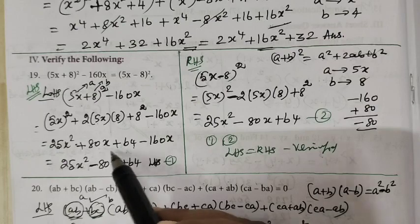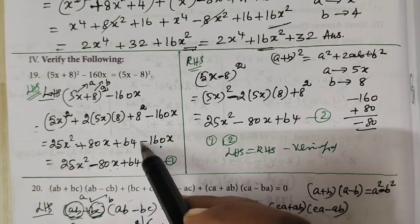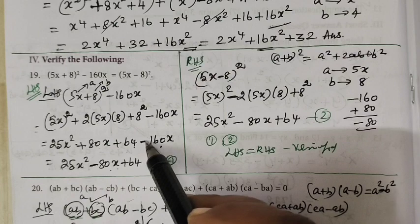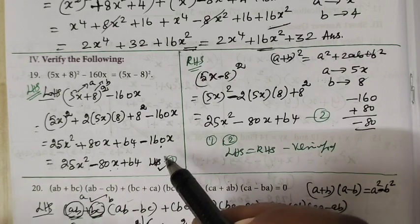So we get plus 80x minus 160, minus 80x. This will be the answer for LHS.